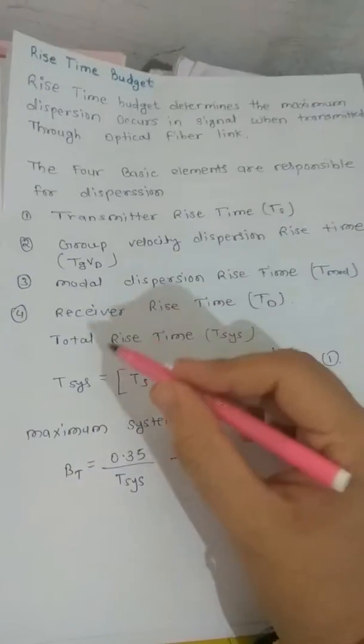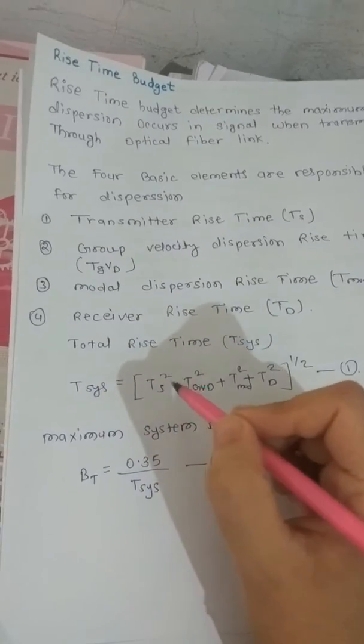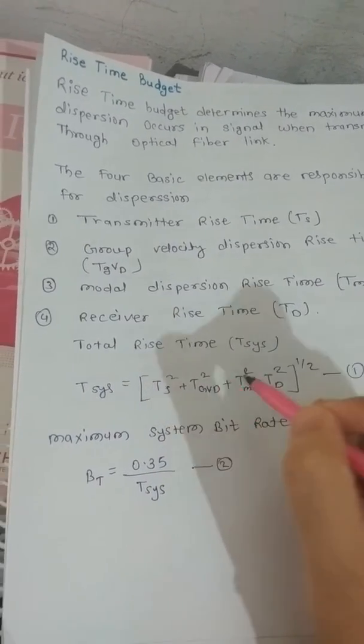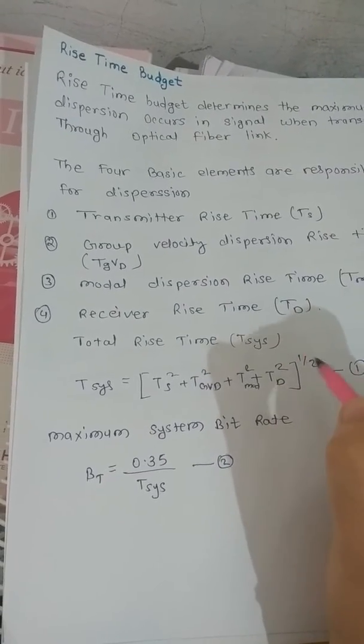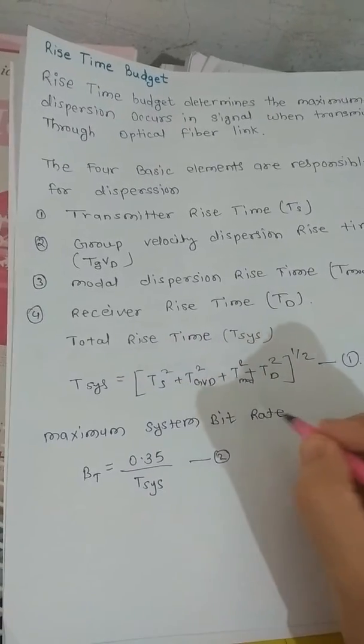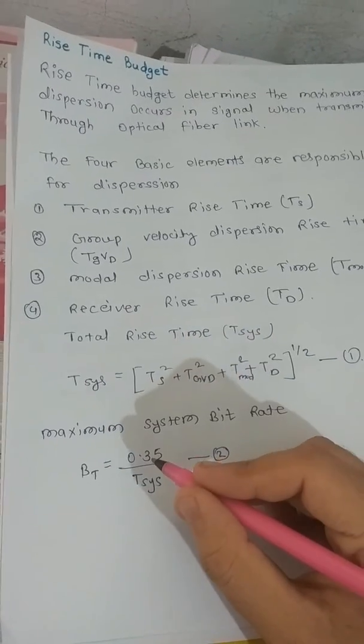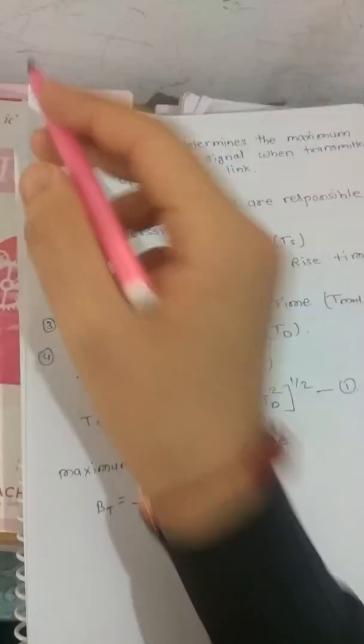Total rise time is given by T_system equals square root of Ts squared plus T_GVD squared plus T_mod squared plus T_D squared. The maximum system beat rate is Bt equal to 0.35 divided by Tss. That is rise time budget.